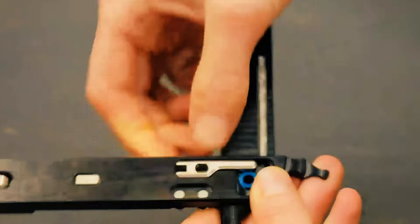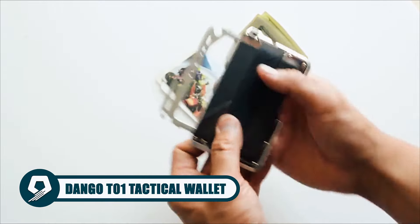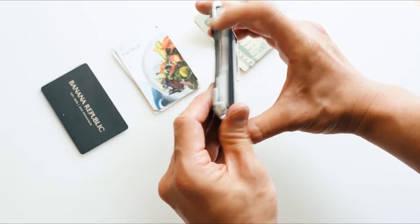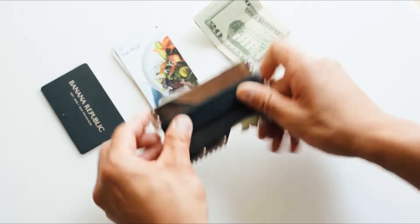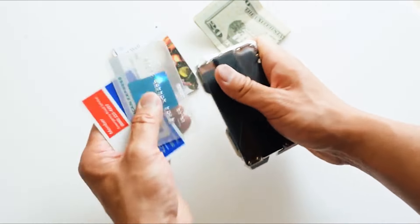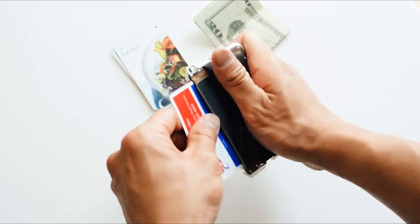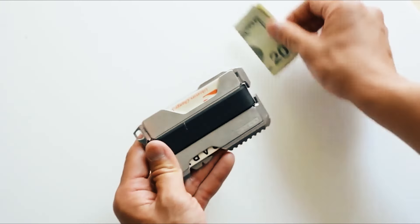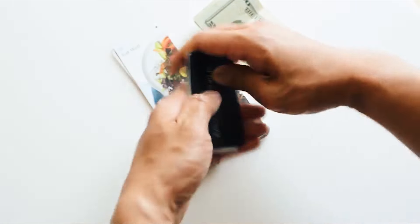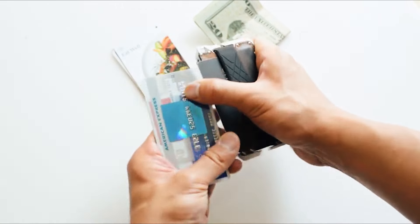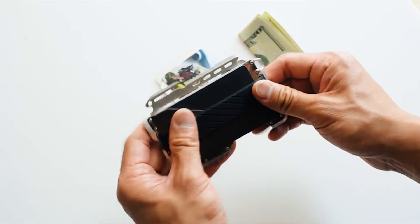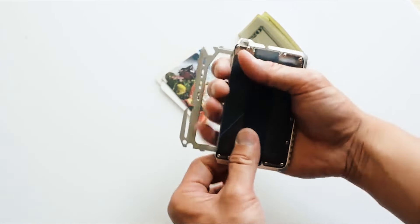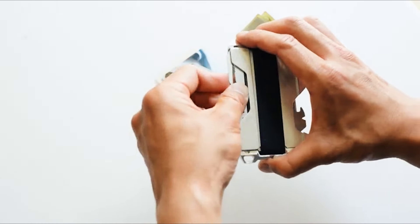Elevate your everyday carry with the Dango T01 Tactical Wallet, a fusion of style and functionality. Crafted from top-grain leather and aerospace-grade aluminum, it exudes premium quality. With RFID blocking for security and an integrated Dango multi-tool with over 10 functions, this ultra-slim wallet seamlessly combines practicality and sophistication. Designed to hold 12 cards, its single pocket design showcases made in USA craftsmanship, ensuring durability and style. Limited lifetime coverage makes it the standout choice for those seeking a reliable and stylish daily essential.